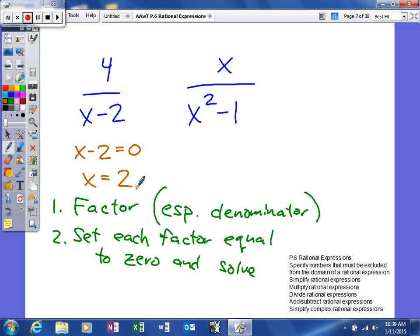That's the excluded value, because if you plug two in for your variable x, it will give you four divided by zero, which is impossible.